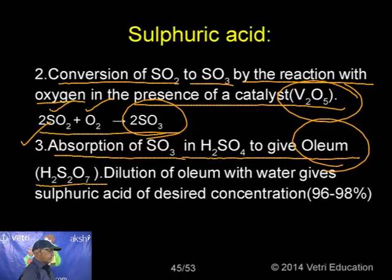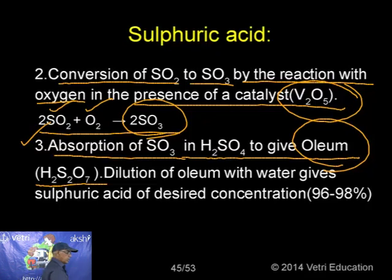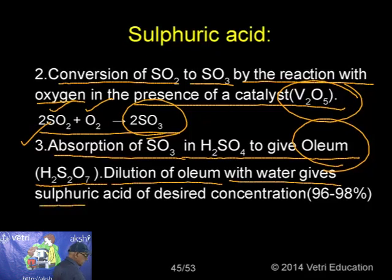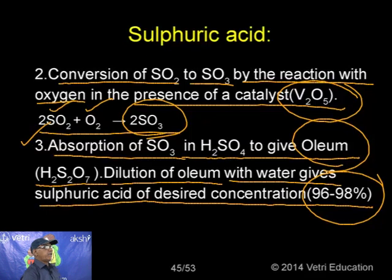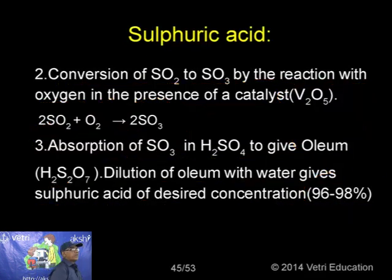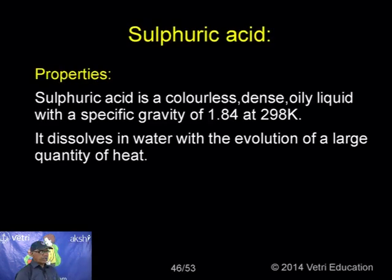Sulphur forms a number of oxoacids including H₂SO₃, H₂SO₄, H₂SO₅, H₂S₂O₇, H₂S₂O₈, and others. As per the syllabus, let me concentrate on sulphuric acid. The three important common mineral acids are hydrochloric acid, sulphuric acid, and nitric acid.